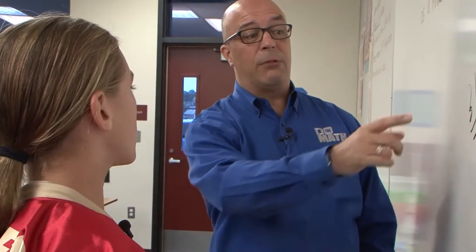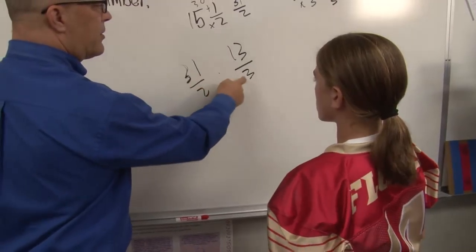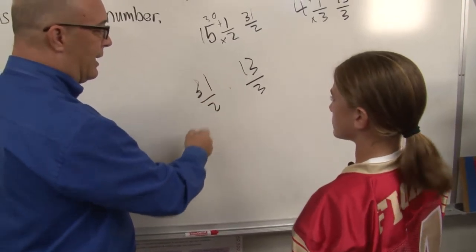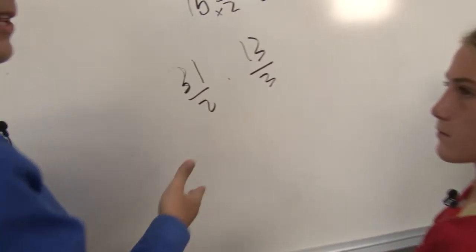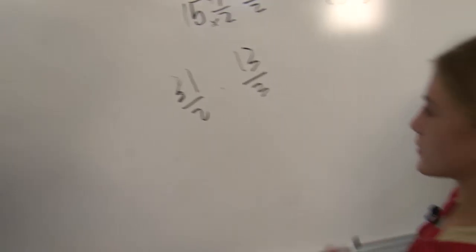Good, I was going to ask you if you could cross-simplify first, and here we can see that 31 and 3, there is no common factor for those, right? No. And the same thing with 2 and 13, nothing goes into 2 and 13, so we're just going to have to multiply straight across.